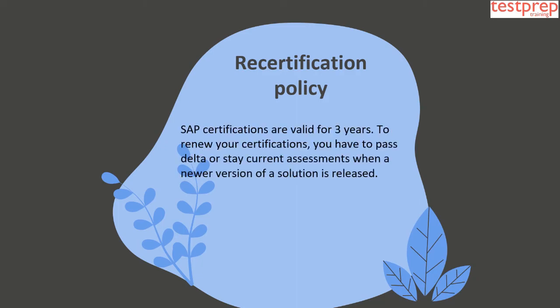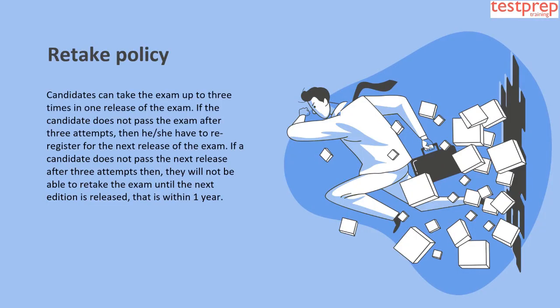Re-certification policy: SAP certifications are valid for three years. To renew your certification, you have to pass delta or stay-current assessments when a newer version of a solution is released. Retake policy: Candidates can take the exam up to three times in one release. If they do not pass after three attempts, they must re-register for the next release. If they fail the next release three times, they cannot retake the exam until the next edition is released, which is within one year.